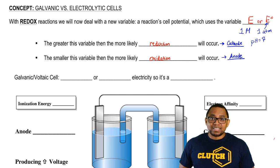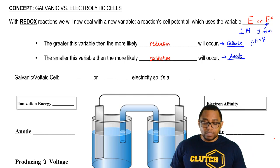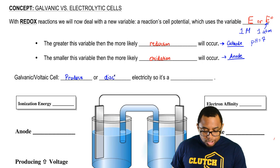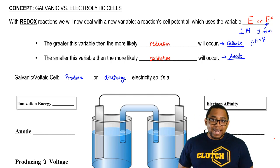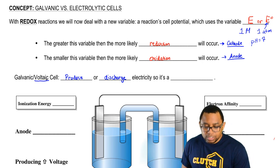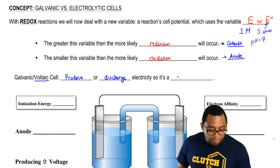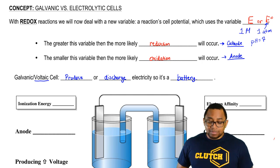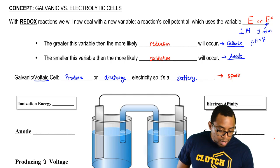Let's first talk about the galvanic cell. In a galvanic cell, we have the creation of electricity. Galvanic cells either produce electricity or they discharge electricity over time. A galvanic cell can also be called a voltaic cell. Both of them, because they produce electricity, they are just batteries. They are a spontaneous cell because they create this electricity on their own.